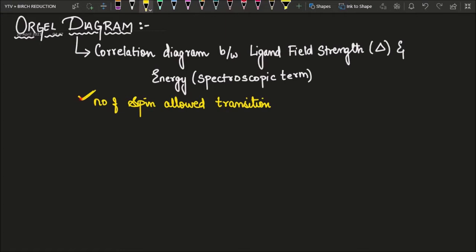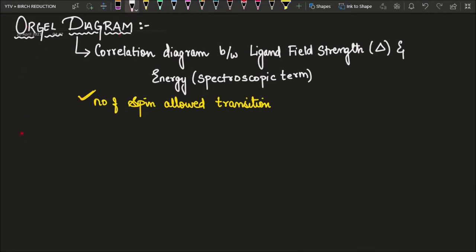So in order to find out the number of transitions we need to have the Orgel diagram in our memory. The Orgel diagram can also be derived, but it will take a little while, so it is always better to memorize the graph. Before going into the trick, we need to remember that the Orgel diagram is only used for spin-allowed transitions.